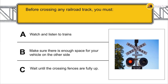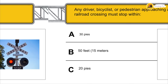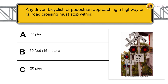Before crossing any railroad track, you must make sure there is enough space for your vehicle on the other side. Any driver, bicyclist, or pedestrian approaching a highway or railroad crossing must stop within 50 feet (15 meters).